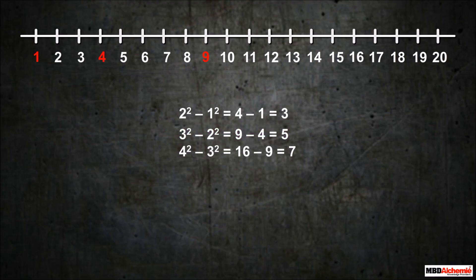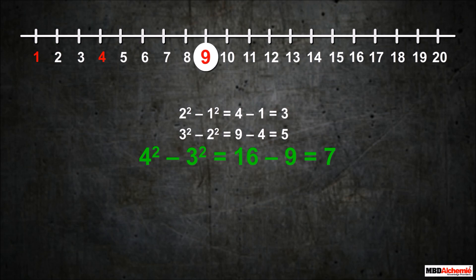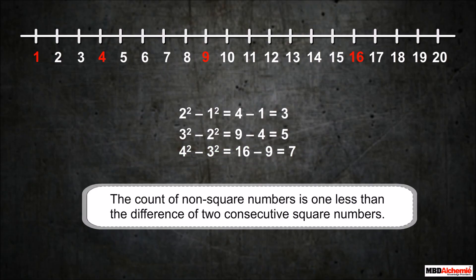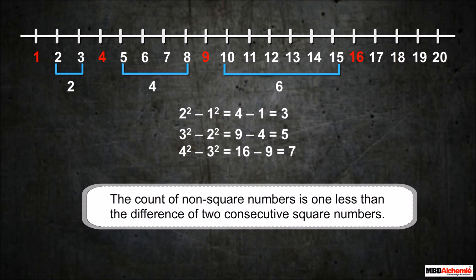Again, find the difference of the square of 3 and the square of 4 — that is 7. Now, count the non-square numbers between the square of 3 and the square of 4. There are six non-square numbers. Do you see any pattern? Observe the difference of the square of any two consecutive numbers and the count of non-square numbers between them. We find the count of non-square numbers is 1 less than the difference. We can generalize this pattern in finding non-square numbers between two consecutive square numbers.